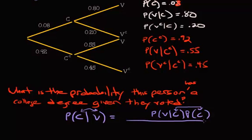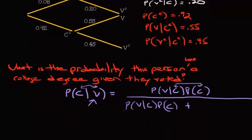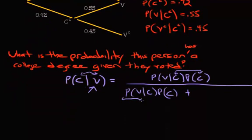And then you're going to divide by... okay, so you would rewrite this again. So voted given you have a college degree times the probability that you have a college degree, plus... now here's the thing, you want the probability that someone has a college degree given they voted. So we're dealing with the voted group. These are the people who voted and have a college degree. So who are we missing?